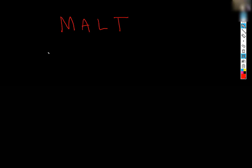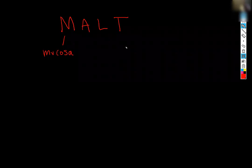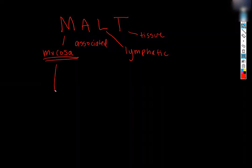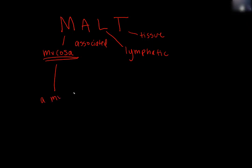This is just going to be a quick explainer of MALT and Peyer's patches and all that, and then we'll go look at some slides after that. MALT in general stands for mucosa associated lymphatic tissue. Mucosa is found in a tubular or hollow organ — it's a mucous membrane lining a hollow space.